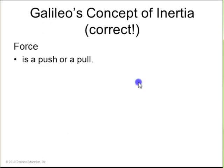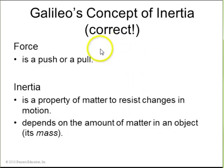Galileo also discovered something about inertia. He talked about forces being a push or a pull and inertia being the property of matter to resist changes in motion. And this depended on the amount of matter in an object or its mass. This is the concept of inertial mass, which is very important.